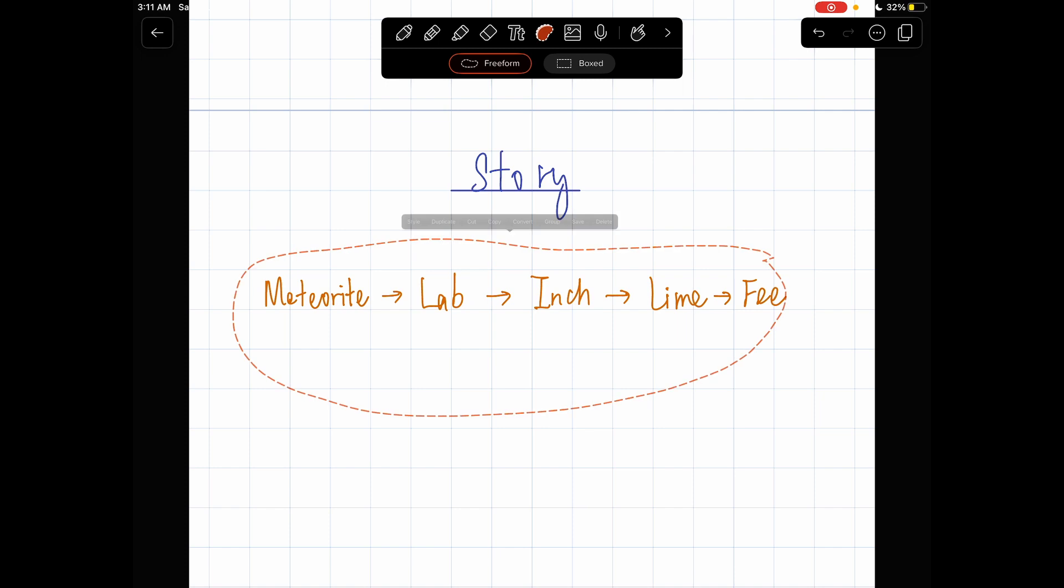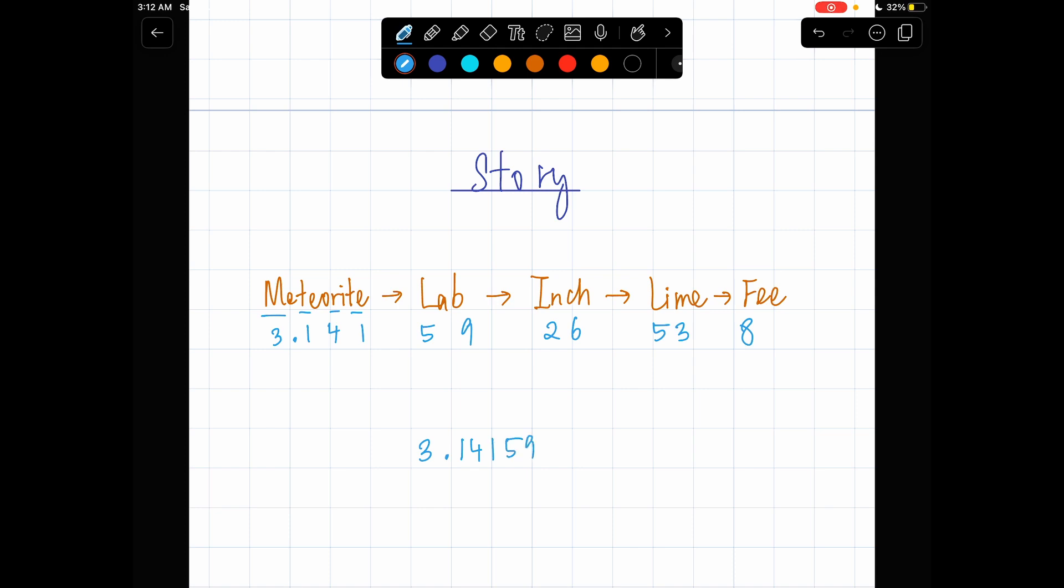And, with that, we have managed to remember these five words. And, these five words actually correspond to the digits of pi. So, METEORITE, M stands for 3, T stands for 1, R stands for 4, T stands for 1 again, and we have L which stands for 5, B which stands for 9, N which stands for 2, CH which stands for 6, L which stands for 5, M which stands for 3, and F which stands for 8. So, with the story, we have managed to remember what the first 11 digits of pi are: 3.1415926538.